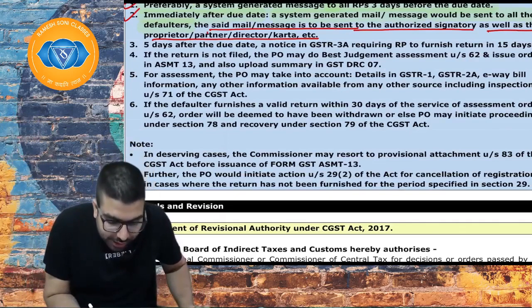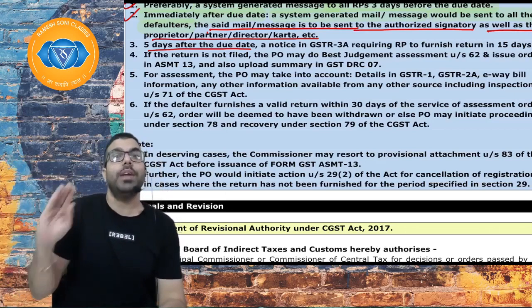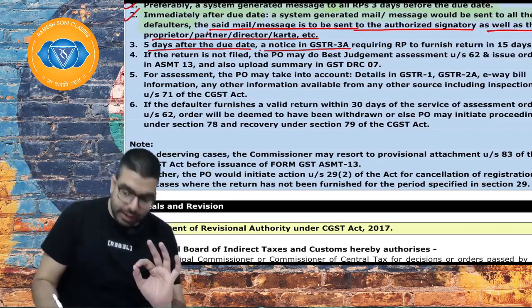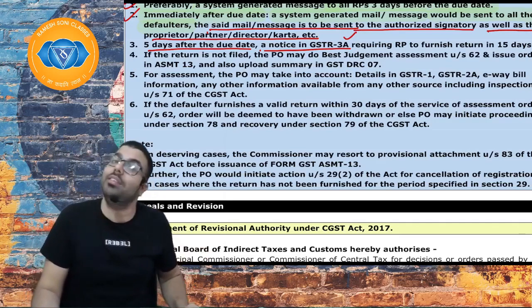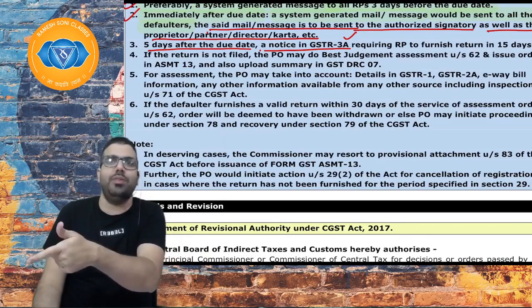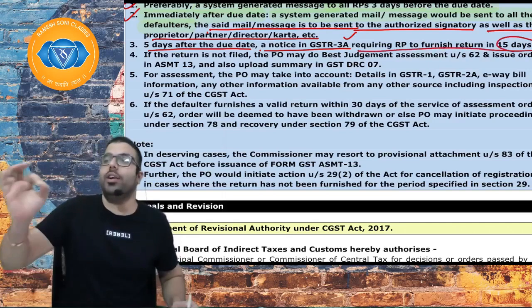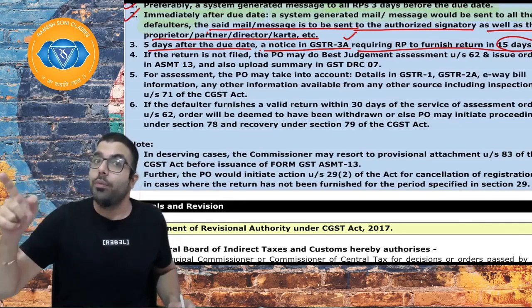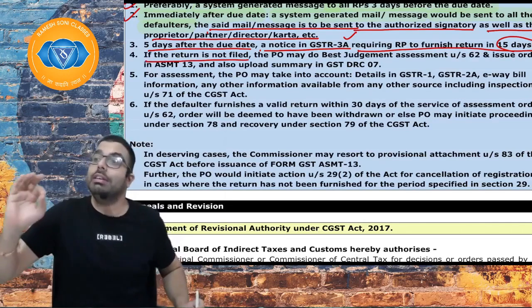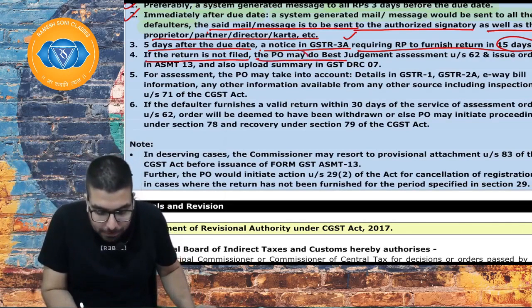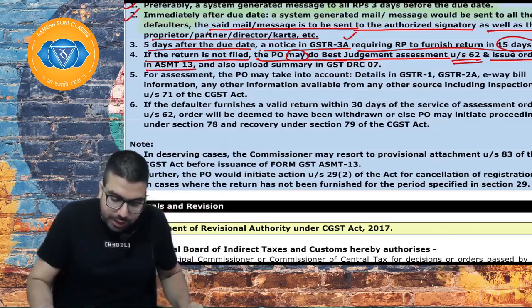Step 3: Five days after the due date, a notice in GSTR-3A under section 46 is issued to the registered person, requiring them to furnish the return within 15 days. The notice tells them: you have not filed your return, please file it within 15 days otherwise we will proceed for best judgment assessment.